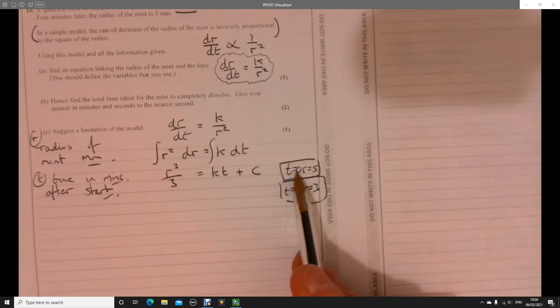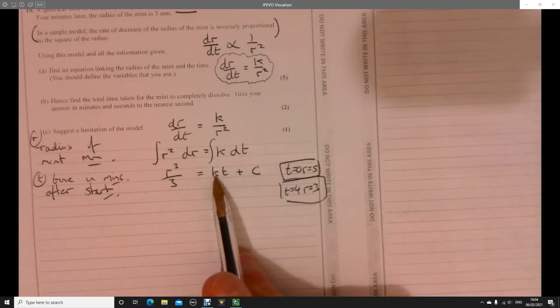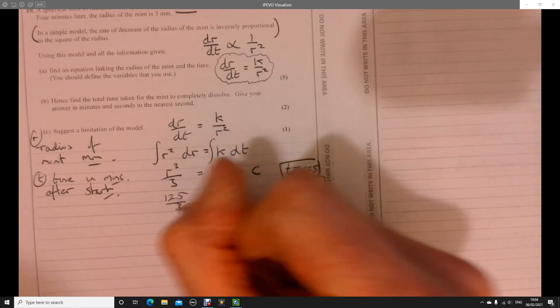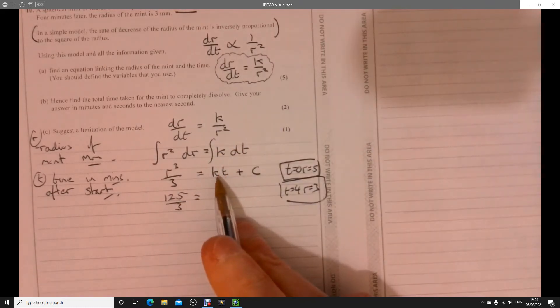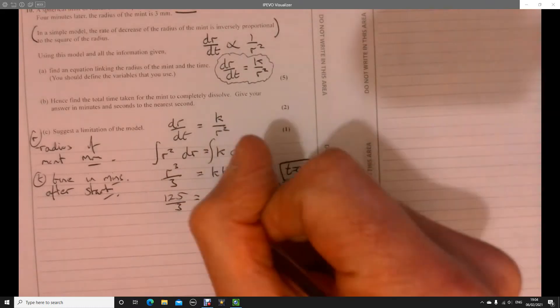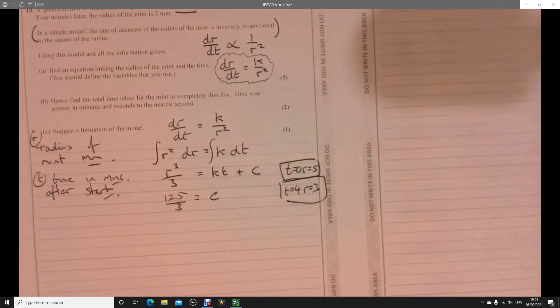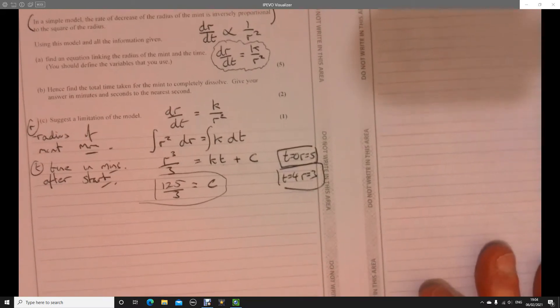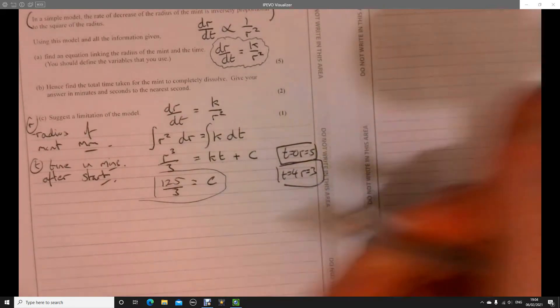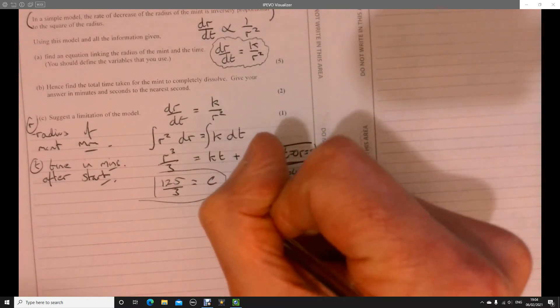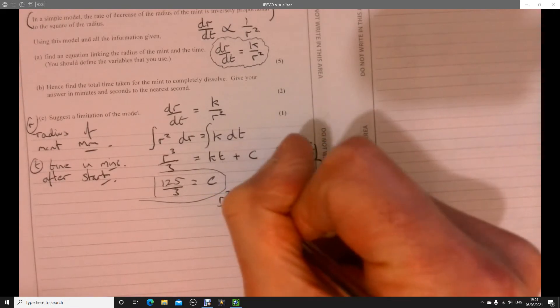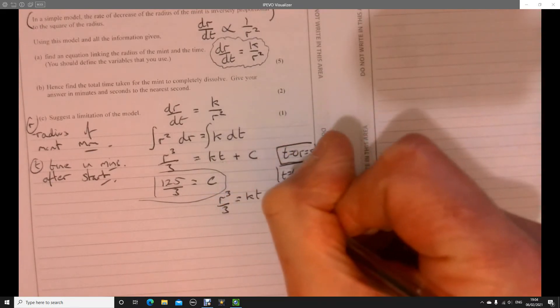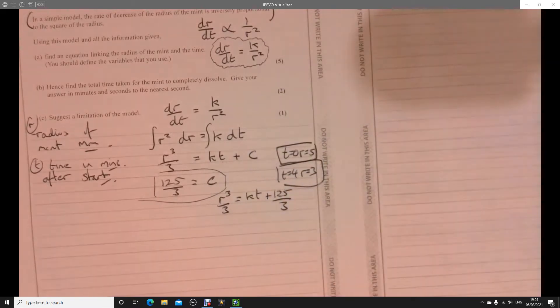So let's use that information to help us find out what these things are. So let's substitute this one in first, just because it's got a 0 there. So if we put a 0 here and a 5 here, we're going to have 125 over 3 equal. Oh, that's nice, isn't it? That's going to be 0. So therefore, C equals 125 over 3. Right. Fantastic. That's handy. Right. So now let's rewrite where we are. So let's just see what we've got now. We've got R cubed over 3 equals KT plus 125 over 3.